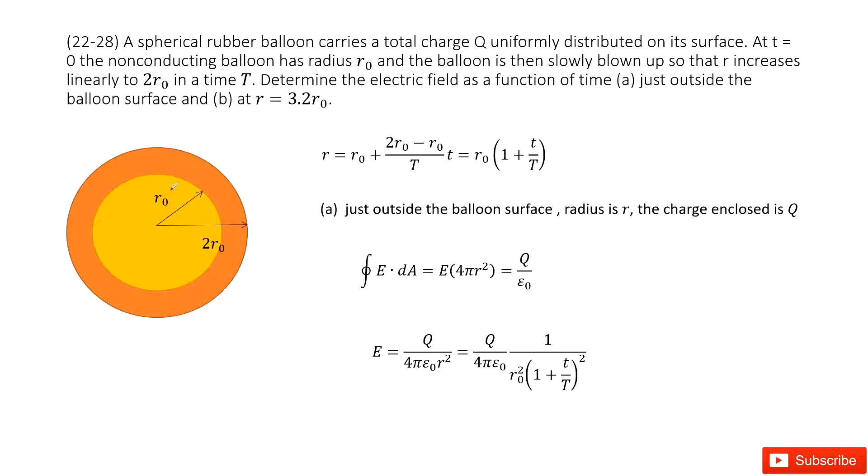It tells us we have a spherical rubber object. It can extend from the radius R₀ to 2R₀ in time T. Now we need to determine the electric field as a function of time. First one, the location is just outside the surface. The next one is R equal to 3.2R₀.